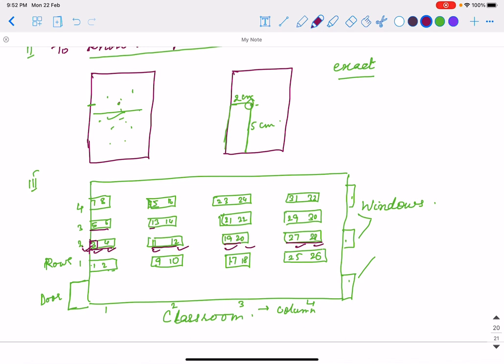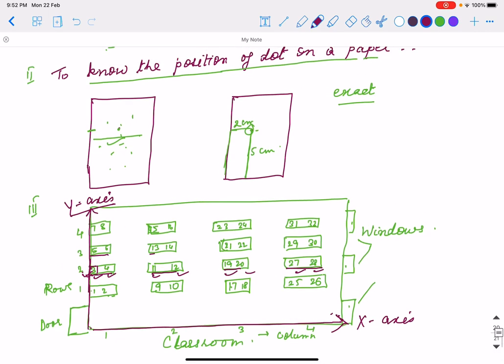That means to know this we need two axes. One is the distance from the horizontal line and one is the distance from the vertical line. So this way we find out one horizontal line is called x-axis and this is called y-axis. And then only we find out the position of a point. So this is the objective of graph, to know the position of a point.